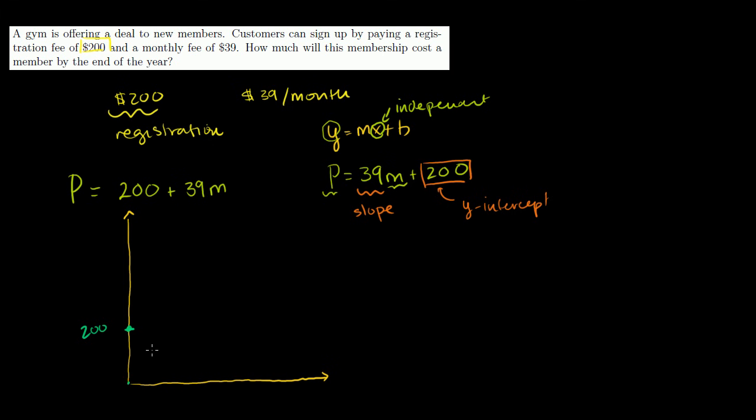Then for every month, we're going to have to spend an extra $39. So the slope is 39. So let's say this is one month right there. This is in months. This is months, and then this axis is price, the P-axis. So this is, as I said, this is like the P-intercept, or the y-intercept.